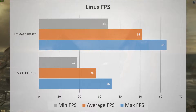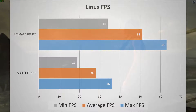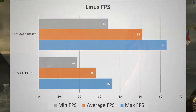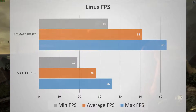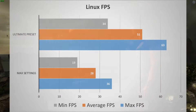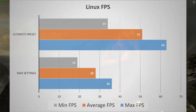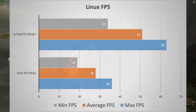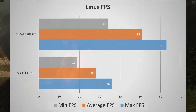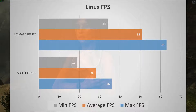As you can see right off the bat in the Linux FPS numbers, that super sample anti-aliasing had a tremendous effect on performance — it basically cut our FPS in half, as is to be expected. For the ultimate preset we get an average of 51 FPS, and for the max settings 28 FPS.